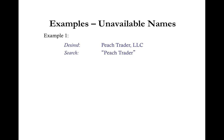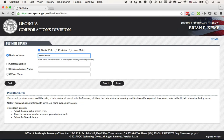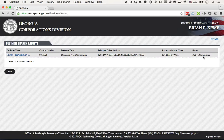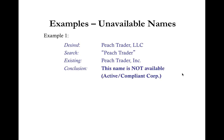Now let's look at examples of unavailable names. Desired LLC name is Peach Trader LLC. Searching Peach Trader returns Peach Trader Inc. with a status of active/compliance. Because there is an active Peach Trader Inc., our desired LLC name Peach Trader LLC is not available — it's not distinguishable. Even though we want to form an LLC and the existing entity is a corporation, the state will not approve it.